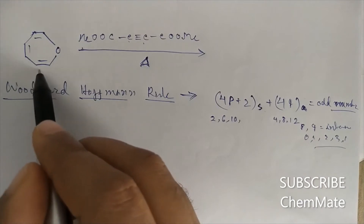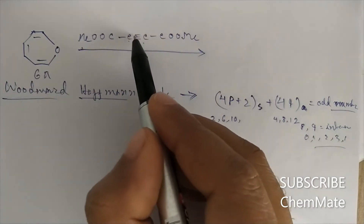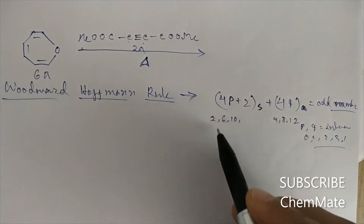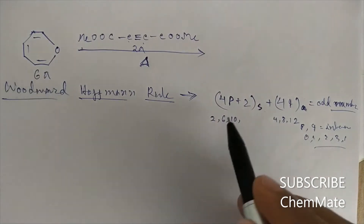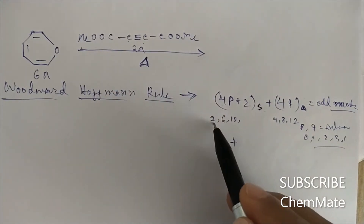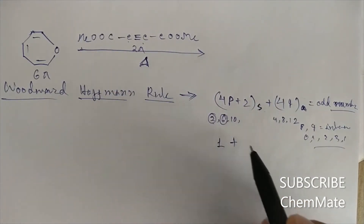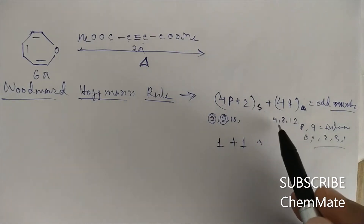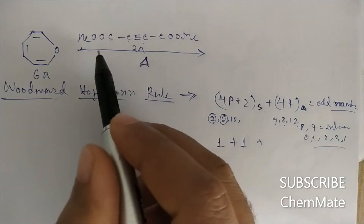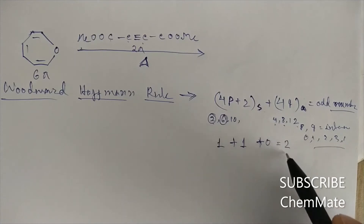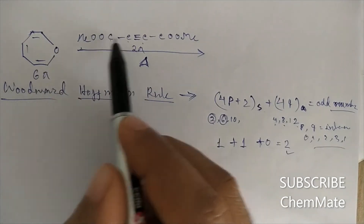Between these two reactants, one is a 6π electronic system and the other is a 2π electronic system. The 6π system is a 4p+2 component (with p=1), and the 2π system is also a 4p+2 component (with p=0). So the number of 4p+2 components equals 1 plus 1, giving 2.